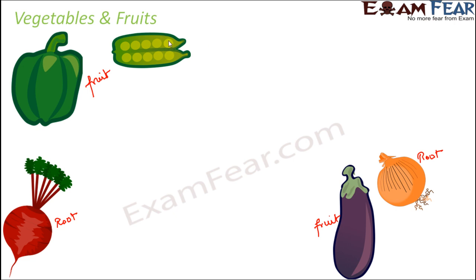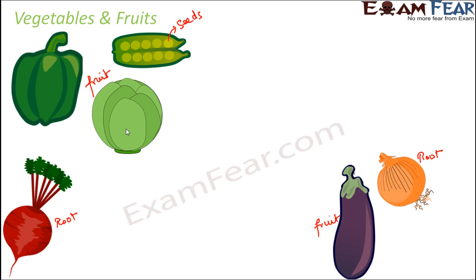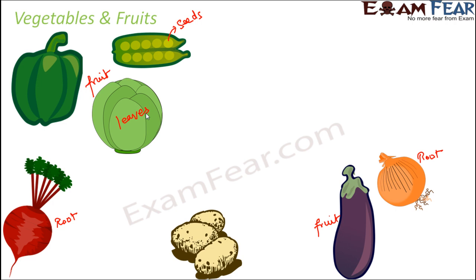Peas — what are peas? The part of the peas which we eat is basically the seeds. Think of cabbage — can you guess which part of the plant it is? When you look at cabbage, all you can see is nothing but leaves. It is like layers and layers of leaves, because cabbage is nothing but the leaves of the plant.